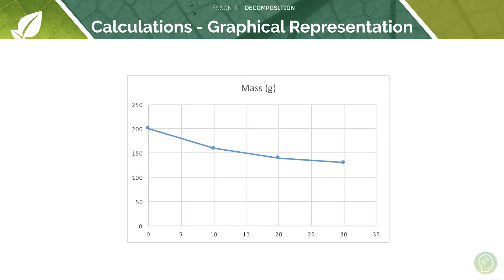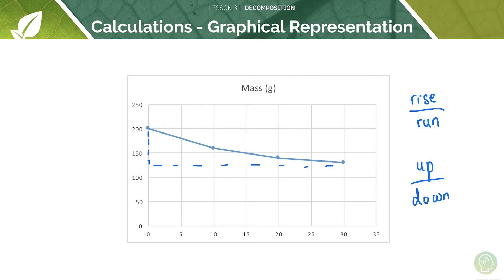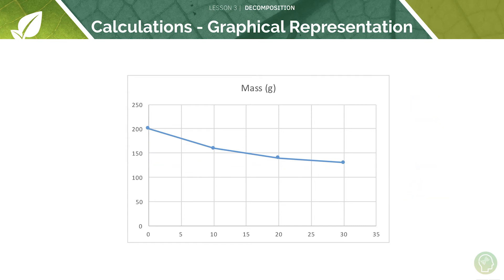Alternatively, if we plot this data on a graph, the gradient is the rate of decay. You can calculate the gradient using rise over run: the rise is the change in the y-axis, the run is the x-axis. If they give you a graph and ask you to calculate the decay, you do rise over run — I like to say up over across, but rise over run is more common. Measure from points as far apart as possible, calculate your rise and divide by your run, and that gives us the average change in mass over time, or the rate of decay.